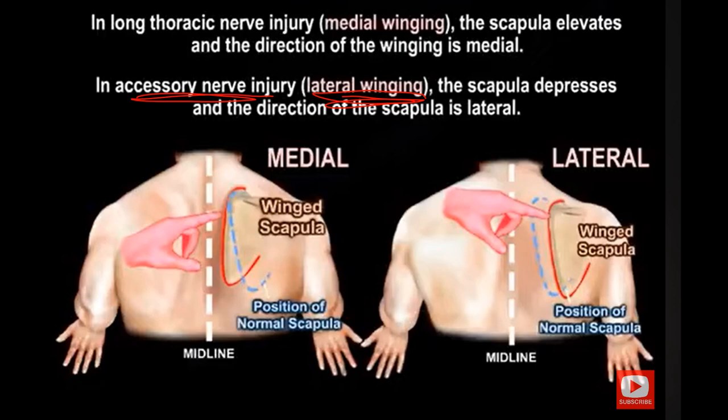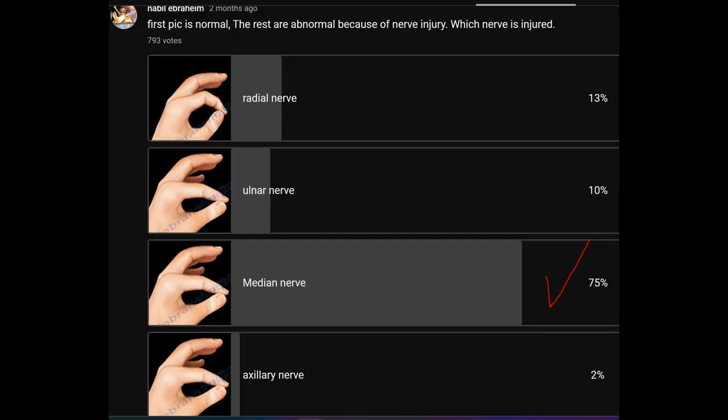In accessory nerve injury, there is lateral winging, and the scapula direction is lateral.